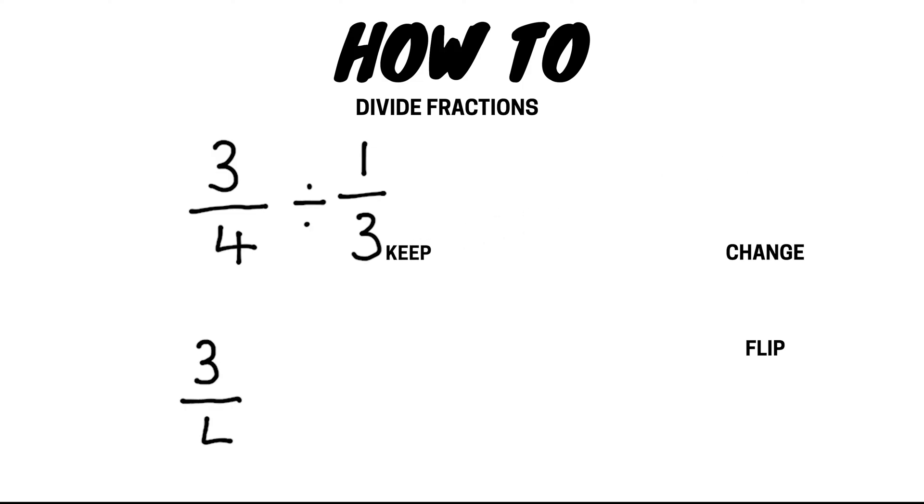So we keep the first fraction the same, we change the divide sign to a multiplication or a times sign, and then we flip the second fraction or take the reciprocal which would be written as three over one.